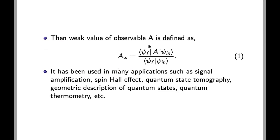Then we can define the weak value of the observable as the expectation value of the operator between initial and final states and the inner product of the two states, pre-selected and post-selected states.